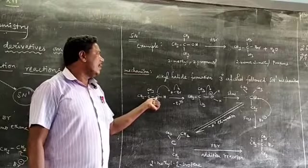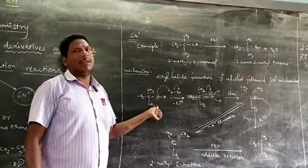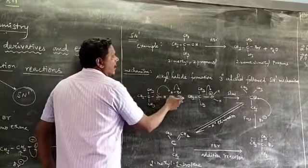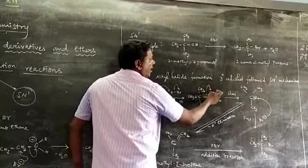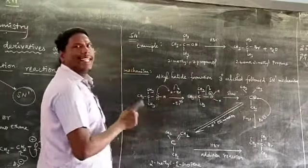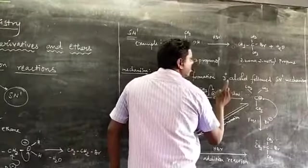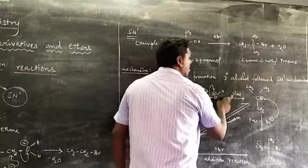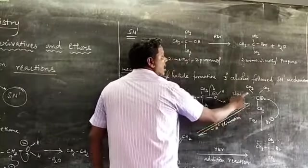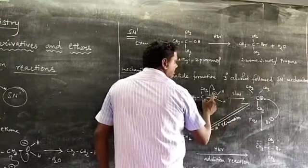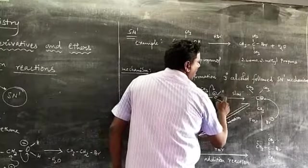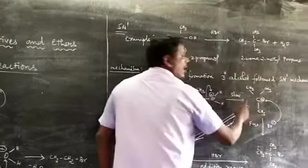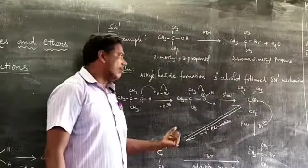The first step is slow and the second step is fast. The slow step forms the carbonium complex, stabilized by the carbonium ion. CH3, CH3, CH3, carbon cation. This is tertiary carbon cation, which is most stable.